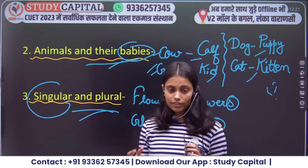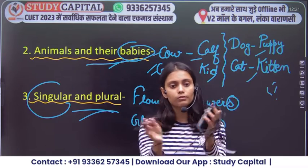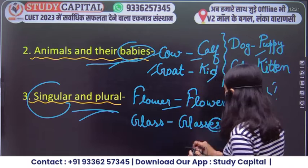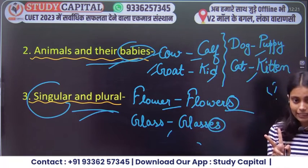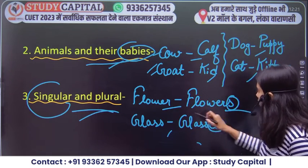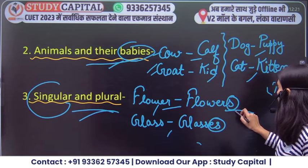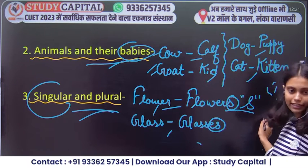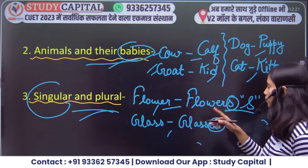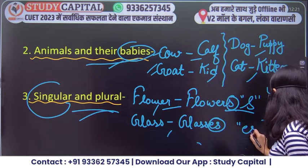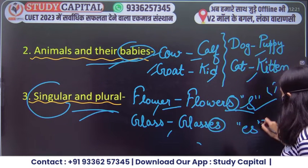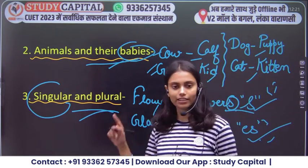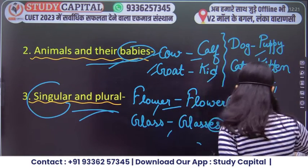Singular means only one, plural means many. This will also be studied — like flower and flowers, glass and glasses. There are two categories: one where you add only S to make it plural, and another where there are different rules. We will elaborate this in the proper class — right now we are just taking the syllabus overview.